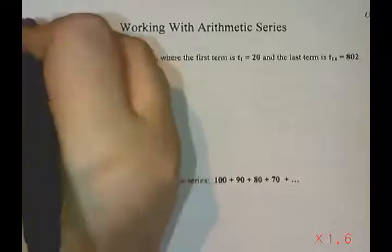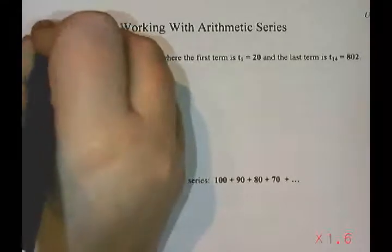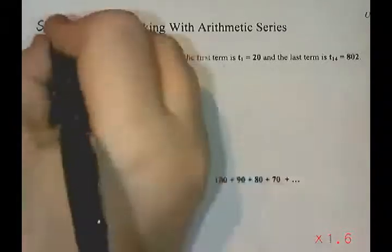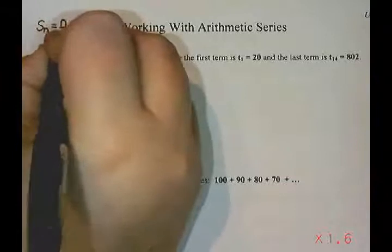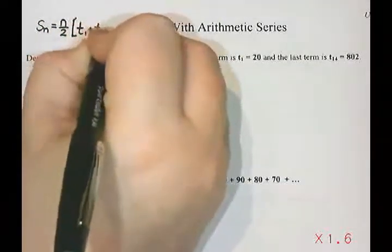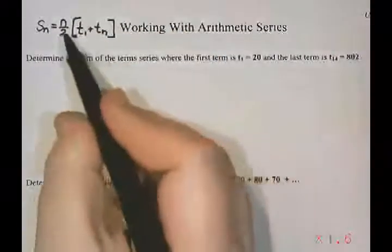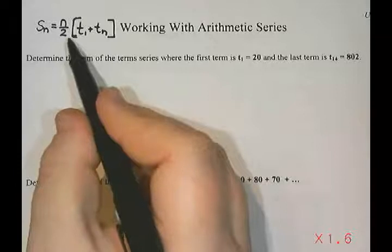One of them is the formula S_n. So we said a series is when you do the sum of all the terms, you add them all together, so we use S for sum. It's n divided by two, so half the number of terms, times t₁ plus t_n. So first term plus last term, and then times half the number of terms.